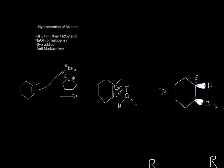For the hydroboration of alkenes, you'll need BH3-THF, this part is the THF part, then you'll need H2O2 and NaOH, or halogens, and it'll be a syn addition and anti-Markovnikov.